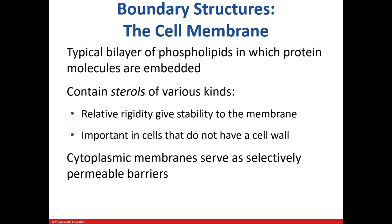The cell membrane of a eukaryote is similar to a prokaryote in that it is a phospholipid bilayer that is selectively permeable. One difference is that eukaryotes have different types of sterols that help to support those organisms that do not have a cell wall.